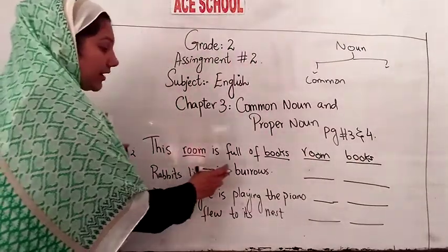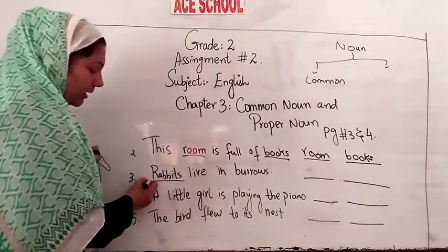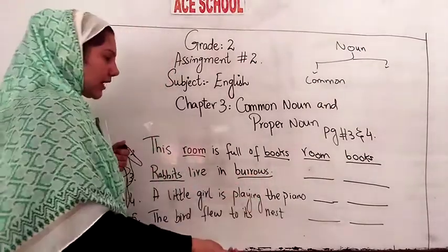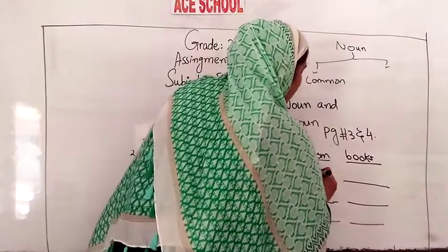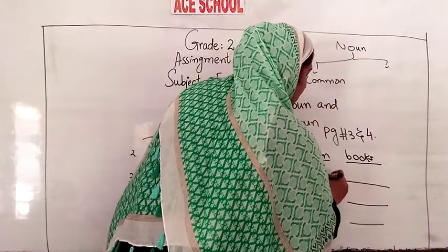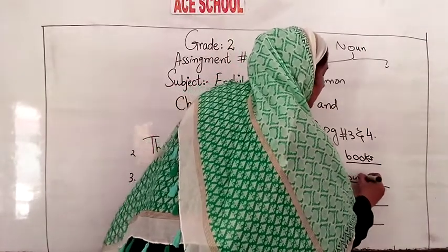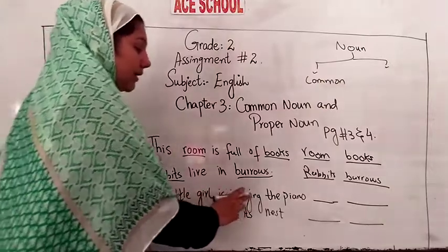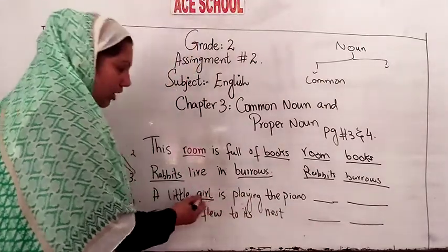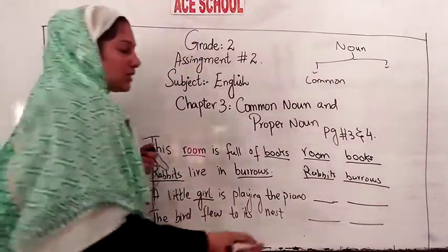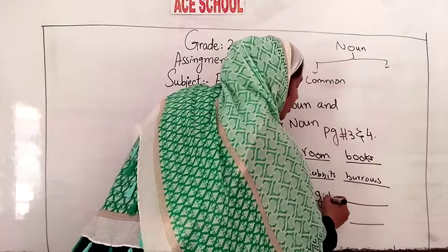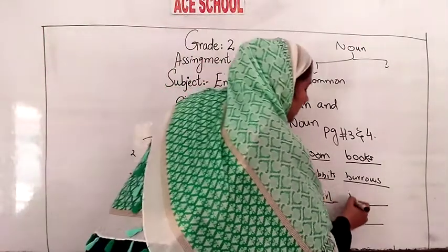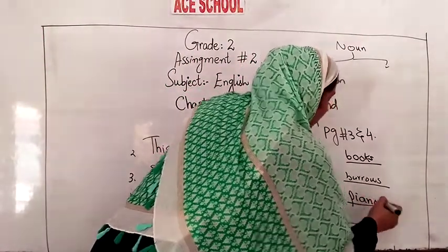'Rabbits live in burrows.' Rabbits is a name of an animal — yes, it's a common noun. Burrows is a name of a place — yes, it's a common noun. 'A little girl is playing with the piano.' Girl is a common noun because it's the name of a person. Piano is a name of a thing — also a common noun.